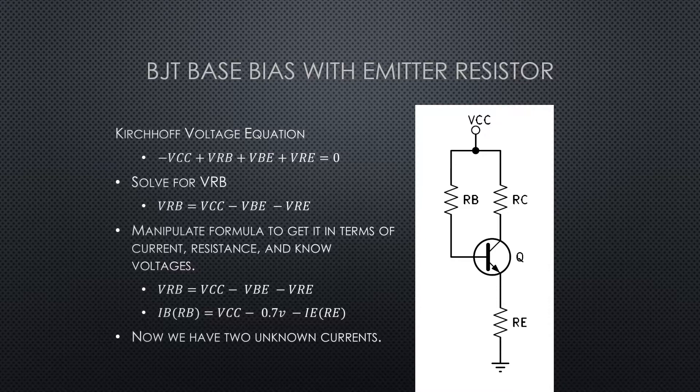Now put it in terms of current and resistance. We've got that equation with two unknowns: IB times RB equals VCC minus 0.7 volts minus IE times RE.